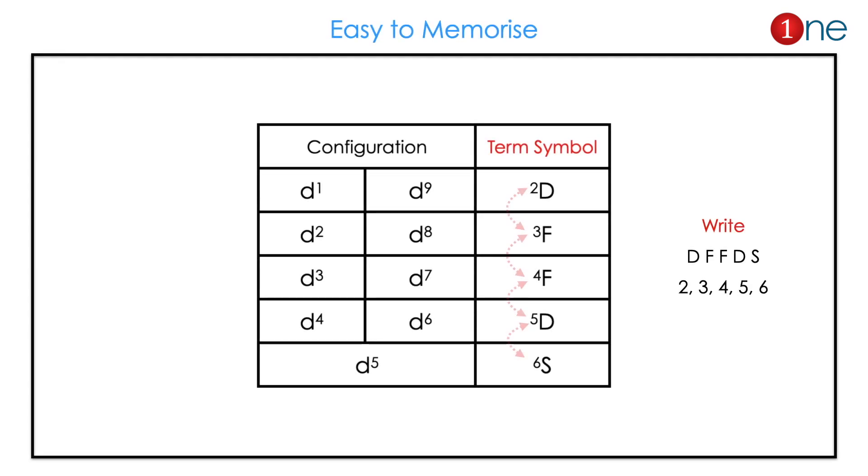The final set can be easily memorizable. You have to write the configuration D1, D2, D3, D4 which is equal to D9, D8, D7, D6.